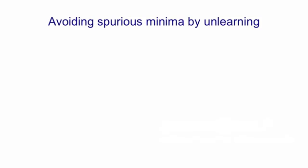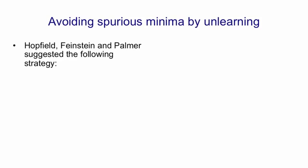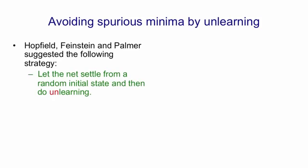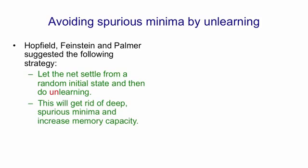One very interesting idea that came out of thinking about how to improve the capacity of a Hopfield net is the idea of unlearning. This was first suggested by Hopfield, Feinstein and Palmer, who suggested the following strategy: you let the net settle from a random initial state and then you do unlearning — whatever binary state it settles to, you apply the opposite of the storage rule. With the previous example, if the net settles to that red merged minimum and you do some unlearning on it, you'd get back the two separate minima. So by getting rid of deep spurious minima we can actually increase the memory capacity.